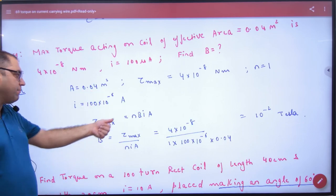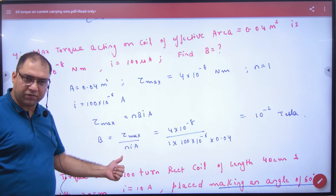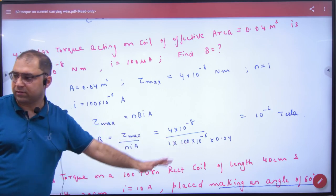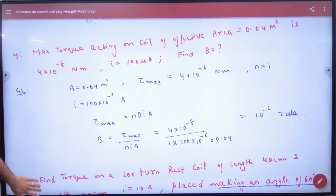So from here, B is the value. Maximum torque is the number of turns. Put one, current and area is the answer. Right? This is the question.